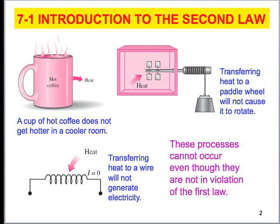The first law states that there's a quantity — we can't violate the quantity. A certain amount of energy has to be transferred, whether as heat, work, internal energy, kinetic, or potential energy — these all have to be balanced. The second law recognizes that there are certain rules and boundaries to how this energy can be transferred.